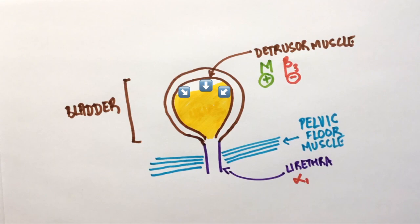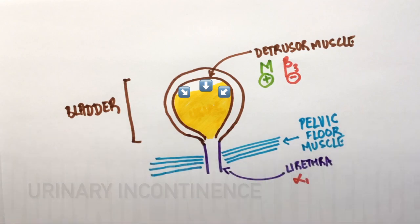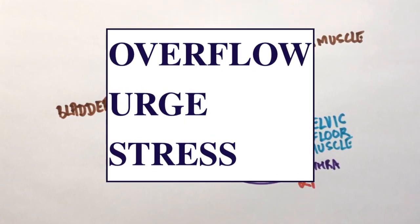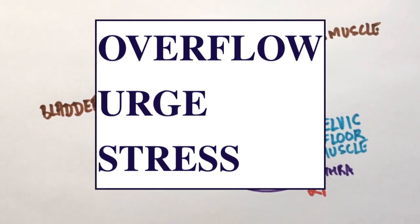Patients who lose control of voiding are known to have urinary incontinence. Based on specific defects, there can be three kinds of urinary incontinence: overflow, urge, and stress. We'll solve questions so that we understand these better.